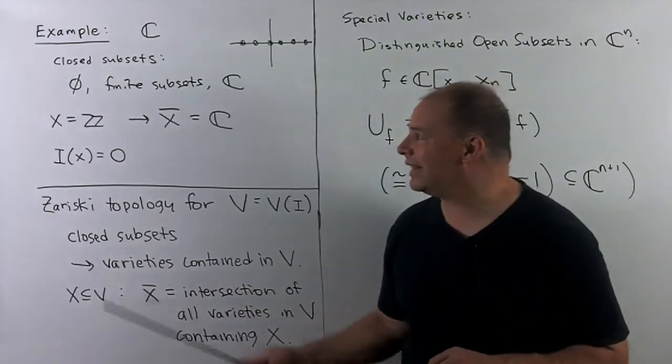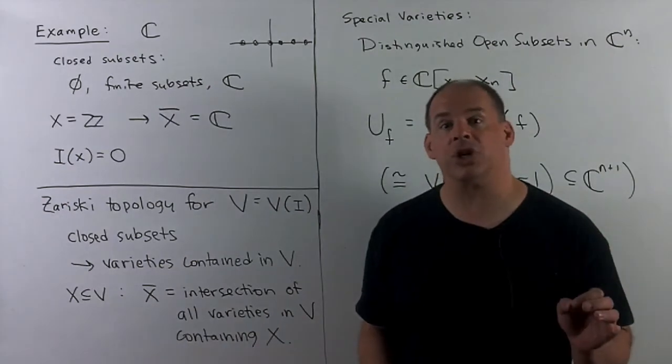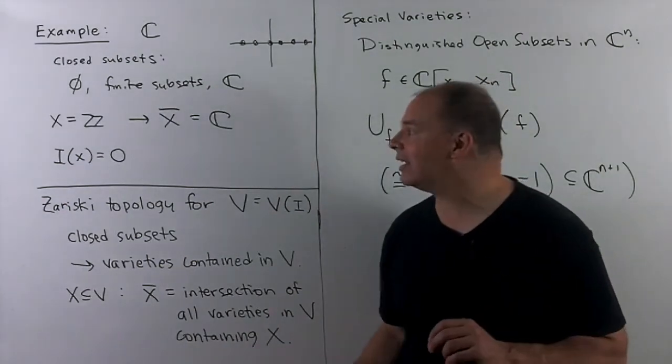In this case, we see the ideal vanishing on all the integers. The only polynomial that does that is the zero polynomial.